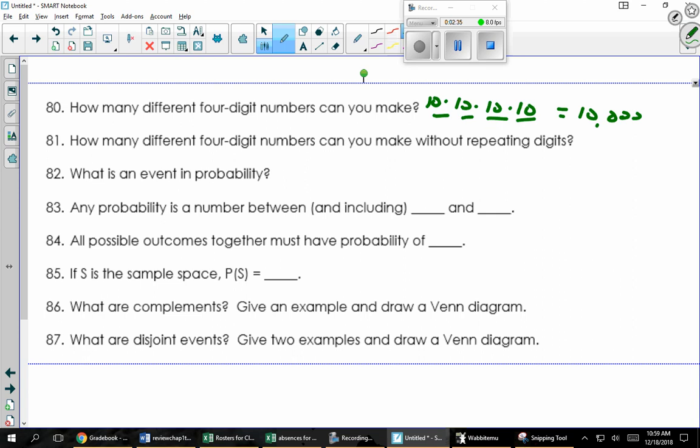81 says, what if I want to do the same thing, but I don't want to allow repeats? So there's ten choices for the first number. The second number can be any of the nine remaining numbers. And then eight, and then seven, because I can't repeat any digits. So that's 720 times 7, that's 5,040.